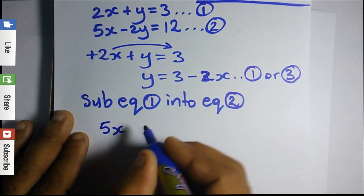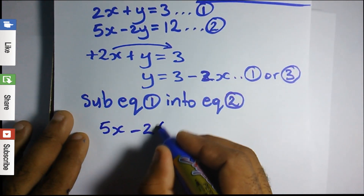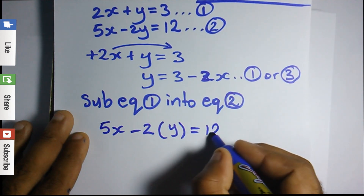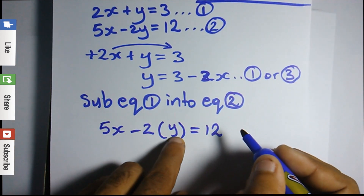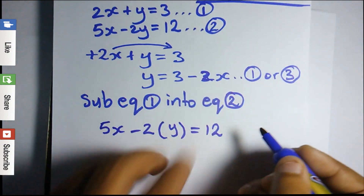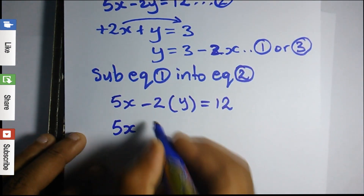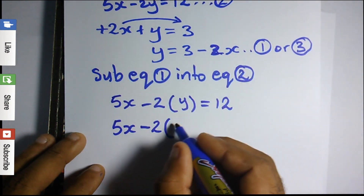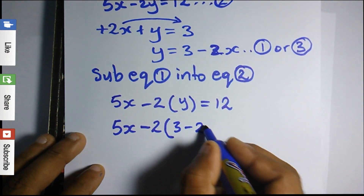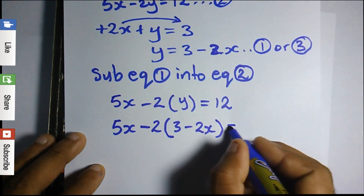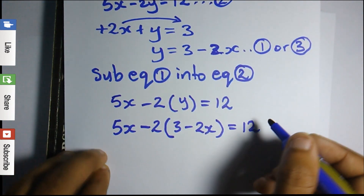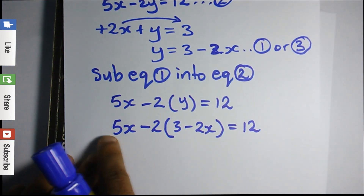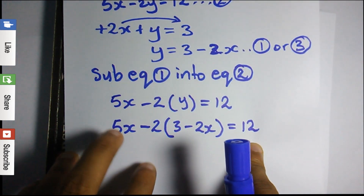So we have 5X minus 2 times Y, equal to 12. Remember, wherever I see Y, I'm going to put 3 minus 2X. So I'm going to have 5X minus 2, open bracket — what's Y? Y is 3 minus 2X — close bracket, equal to 12. As you can see, this is now just a simple linear equation with only X's.